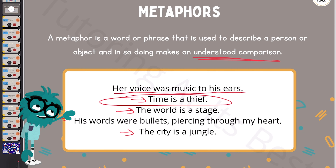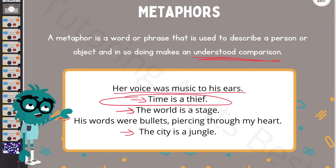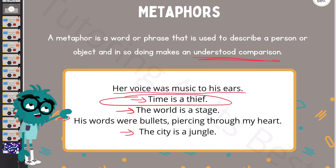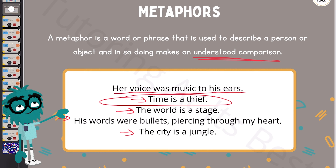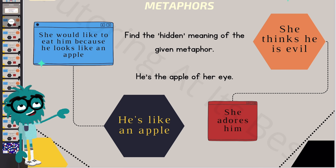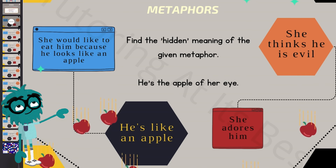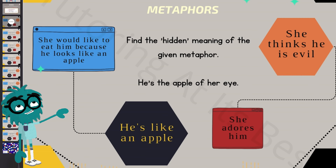I don't expect you to pick this up all in one video. Be sure to watch this video again — repetition is key. Don't forget that. And with that in mind, let's begin with question one: 'He's the apple of her eye.' What do you think that means?